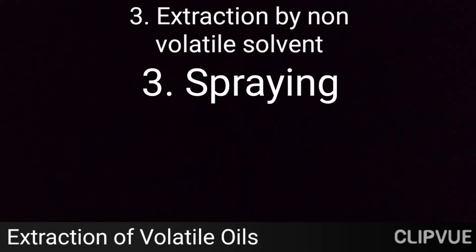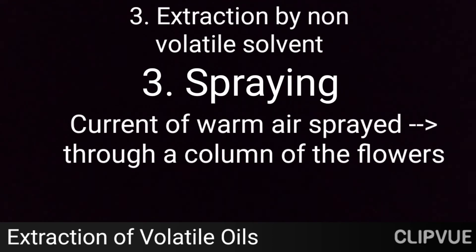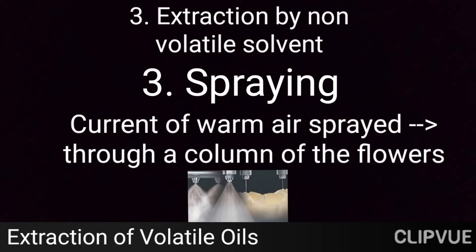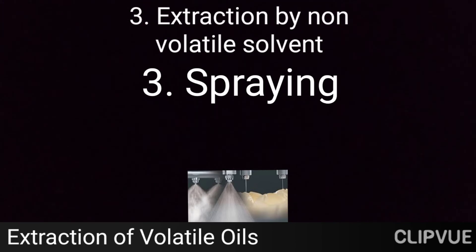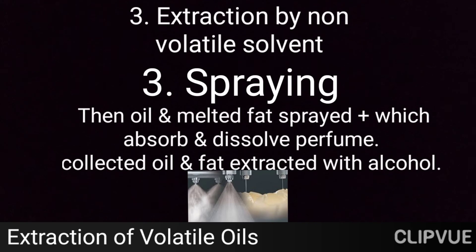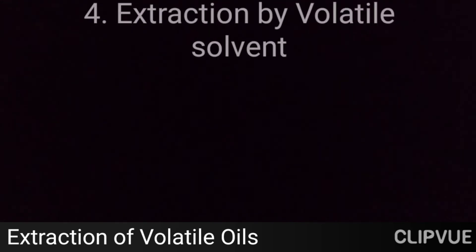The third method under non-volatile solvent extraction is spraying. A current of warm air is spread through a column of arranged flowers. Oil or melted fat is sprayed in, which absorbs and dissolves the perfume. The oil and fats are then collected and extracted with alcohol, similar to maceration and enfleurage, to obtain the odorous principles.